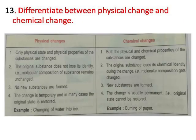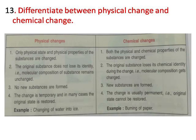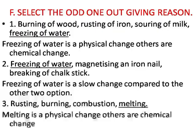Number thirteen: differentiate between physical change and chemical change. In a physical change, only physical form and physical properties will change, but in a chemical change both physical and chemical properties change. In a physical change the original substance does not lose its identity — no new substances are formed — whereas in a chemical change the original substance loses its chemical identity and new substances are formed. Physical changes are temporary and reversible in many cases, whereas chemical changes are permanent and irreversible. Example of physical change: changing of water into ice. Example of chemical change: burning of paper.